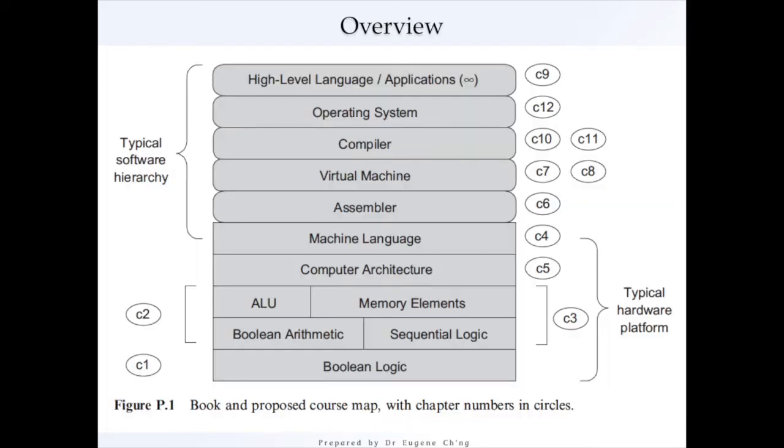Here's a diagram of the elements of computing systems accompanying the Nand to Tetris website. And this diagram, figure P1, is the book and proposed course map with each chapter numbers in circles. In my series, I'll be covering from Boolean logic all the way up to assembly.